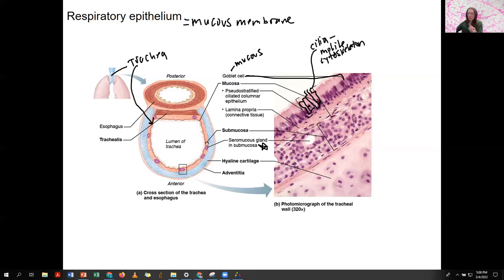Respiratory epithelium is pseudo-stratified columnar epithelium plus the lamina propria underneath it. The connective tissue is typically areolar tissue. Mucous membranes are made up of an epithelial layer plus the underlying connective tissue. That's respiratory epithelium.